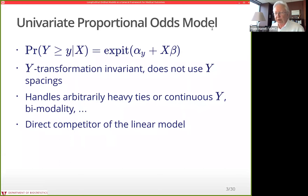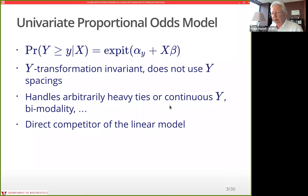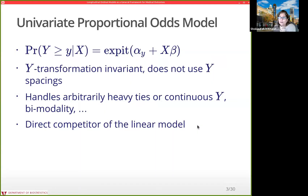Semi-parametric models are useful because they are transformation invariant — they use the ordering of Y but not the spacing. Whether the Y variable is numeric or not doesn't matter. For a discrete outcome like pain-free, pain, or death, it does not assume the distance between pain-free and pain equals the distance between pain and death. It handles arbitrarily heavy ties, clumping at zero, floor and ceiling effects, bimodality, continuous, and semi-continuous outcomes. I almost never use linear models anymore because I got tired of worrying about transforming the outcome variable properly.